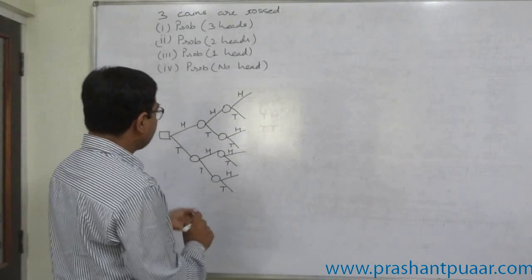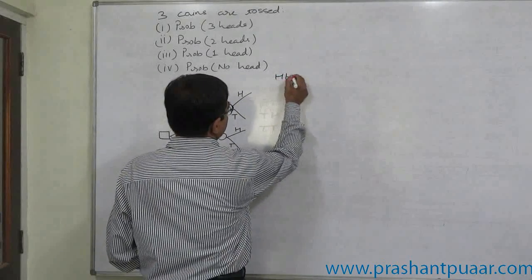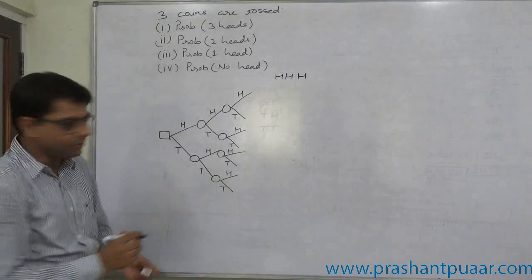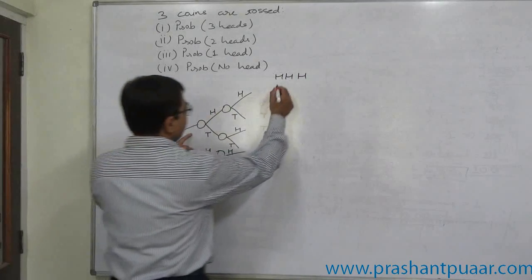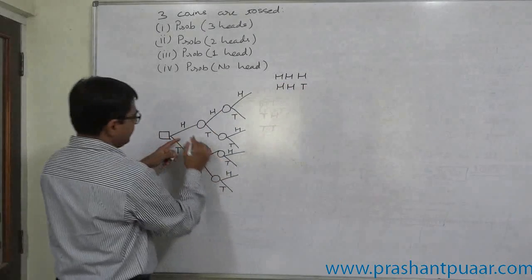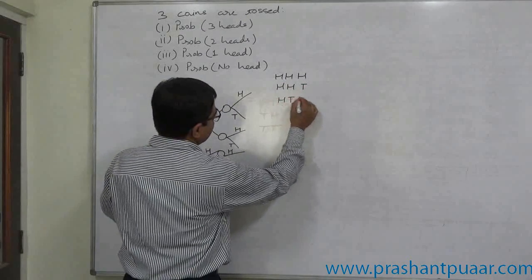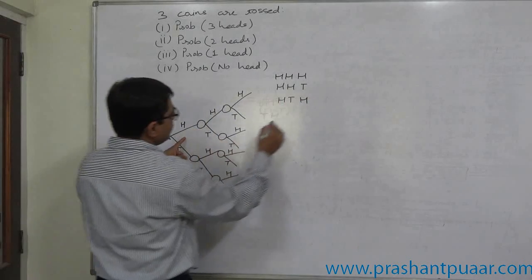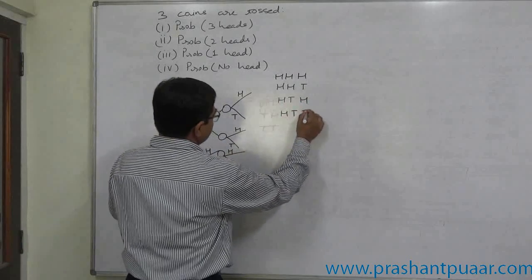What are the eight outcomes? Head, head, and head — head on the first, head on the second, head on the third. Then head, head, tail. Then head, tail, head. Then head, tail, tail.